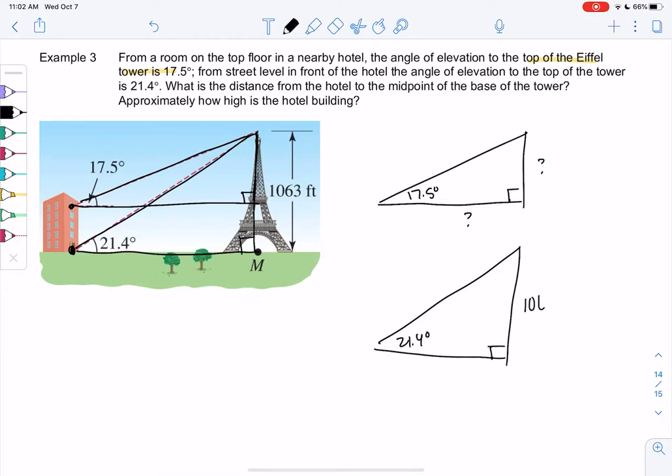And then this one, we at least know the height is 1063. The height of the Eiffel Tower is 1063 feet.